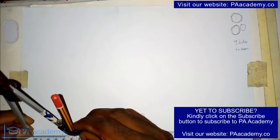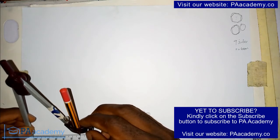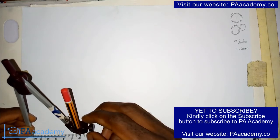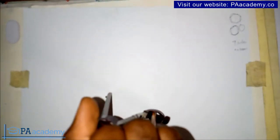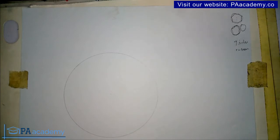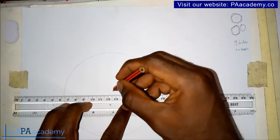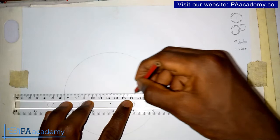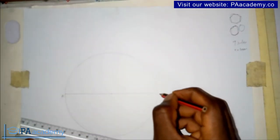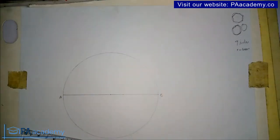I'm measuring using my compass to set the radius to six centimeters, and now I'm going to draw the circle. Here we already have our circle. The next thing is to draw the diameter — let's draw a diameter and call the endpoints point A and point B.